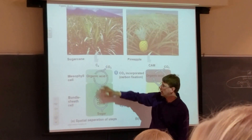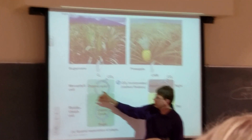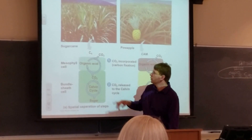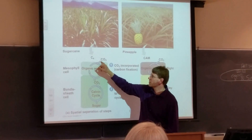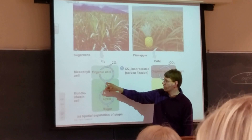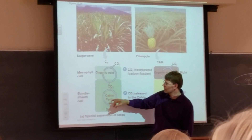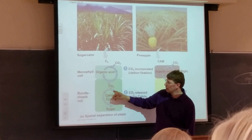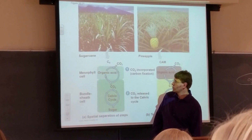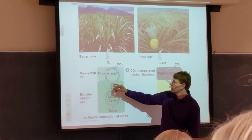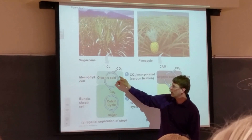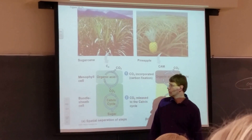Here's our C4 situation. This is the mesophyll cell of a C4 plant, and this is the bundle sheath cell. You've got your CO2 being fixed by PEP carboxylase. The 4-carbon compound gets transferred into the bundle sheath cell, where it's decarboxylated. That goes through the Calvin cycle, avoiding photorespiration because it pumped up the CO2 concentration in the bundle sheath cell. This pyruvate goes back to make phosphoenolpyruvate, with the extra ATP required to do that.